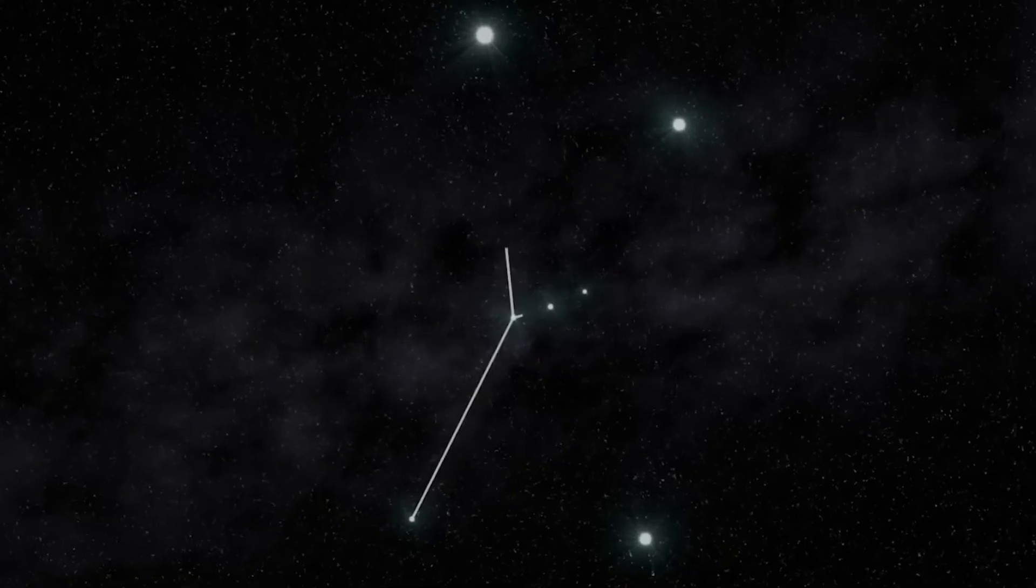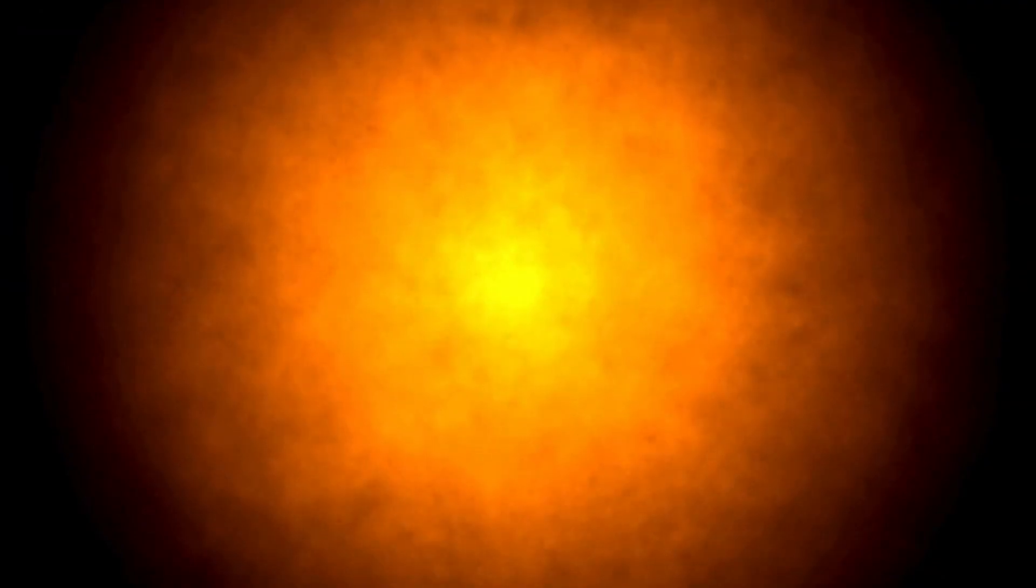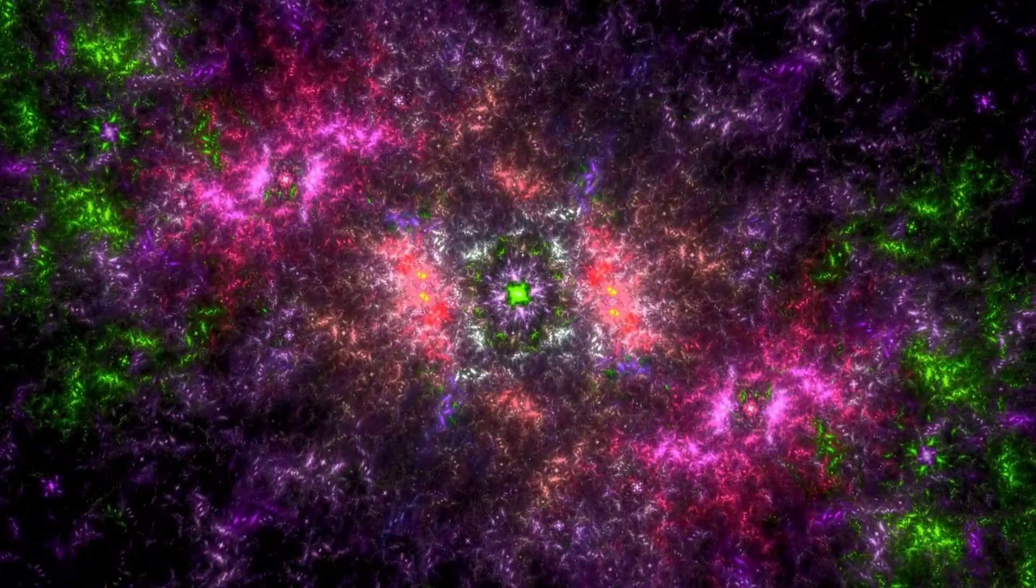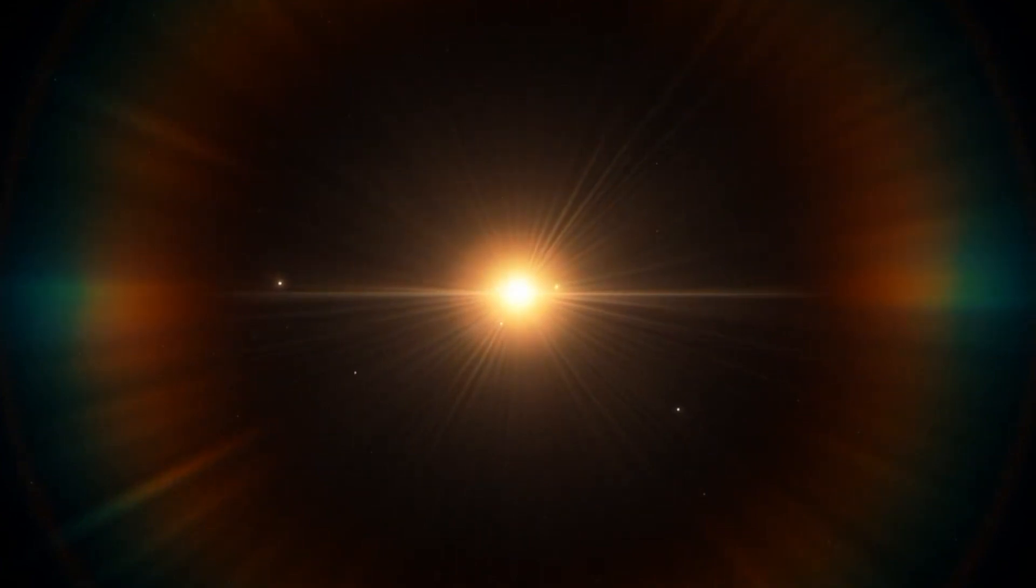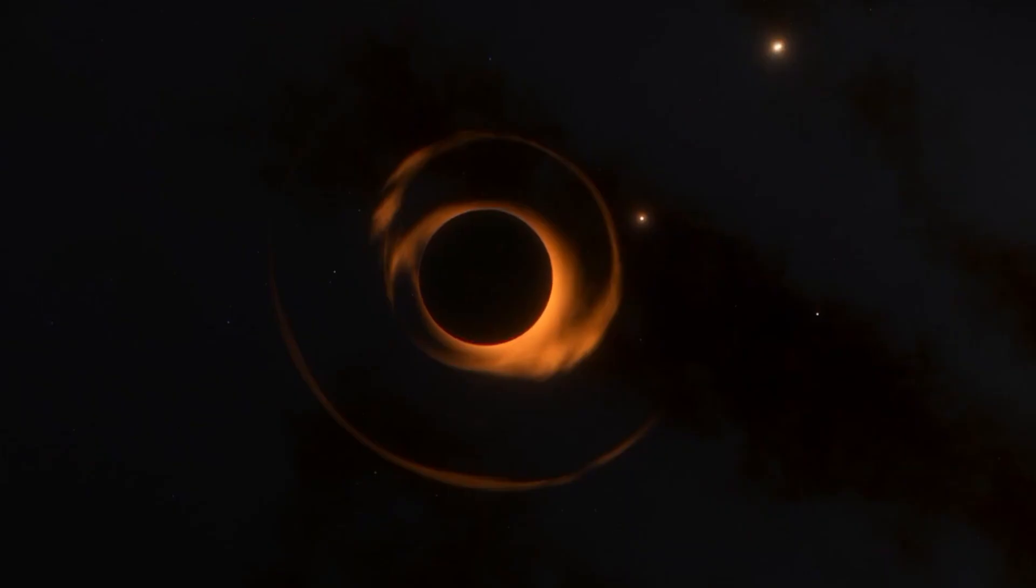However, in late 2019, something remarkable happened. Betelgeuse inexplicably began to dim. This dimming was so striking that it could be discerned with the naked eye, and it continued to fade for several months, sparking concerns among astronomers that Betelgeuse might be approaching the end of its life cycle.